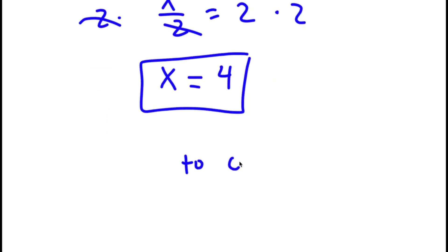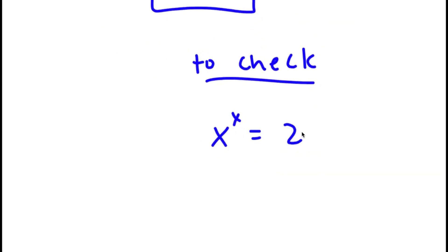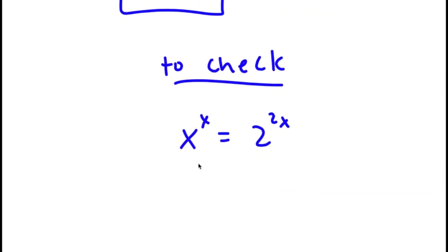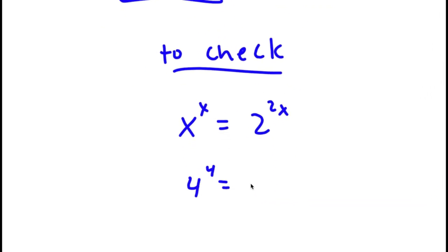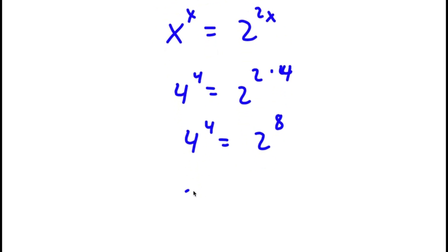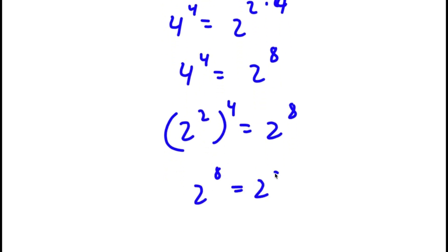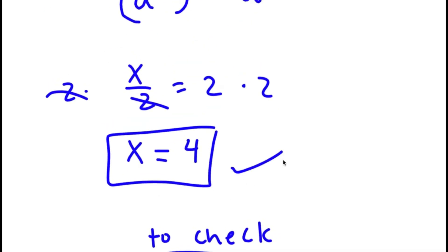Now to check: my original equation was x to the power of x is equal to 2 to the power of 2x. I know that x equals 4, so now I have 4 to the power of 4 is equal to 2 to the power of 2 times 4. So 4 to the power of 4 is equal to 2 to the power of 8. Now 4 is the same thing as 2 squared, so I have 2 squared to the power of 4, which equals 2 to the power of 8. And 2 to the power of 8 equals 2 to the power of 8 — this checks out, so my solution is correct.